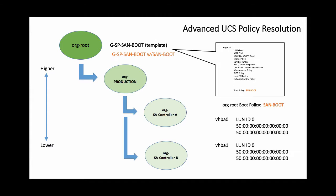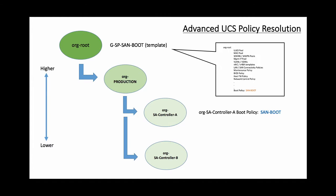If I were to craft a global service profile from template and put it in root, it would grab that san boot placeholder policy — nothing bad happens, you just won't boot to a server. Now as we move down the sub-org, this is where I'm actually going to craft my real boot policy and I'm still going to call it 'san boot' — the same exact name. You can't have policies with the same name in the same org or sub-org, but I can change my org and craft another policy called san boot.